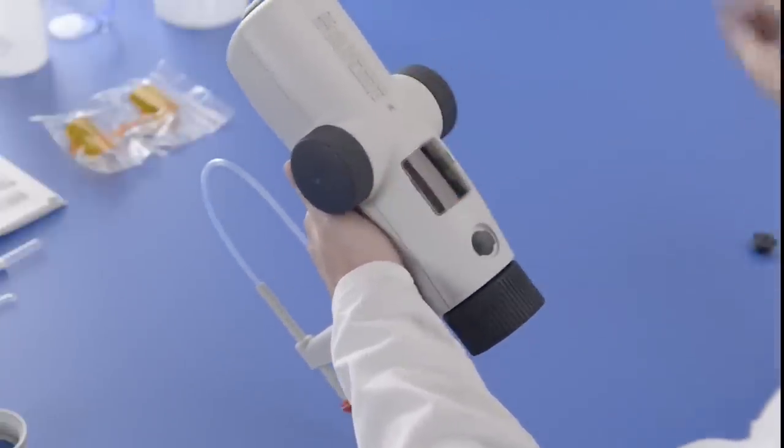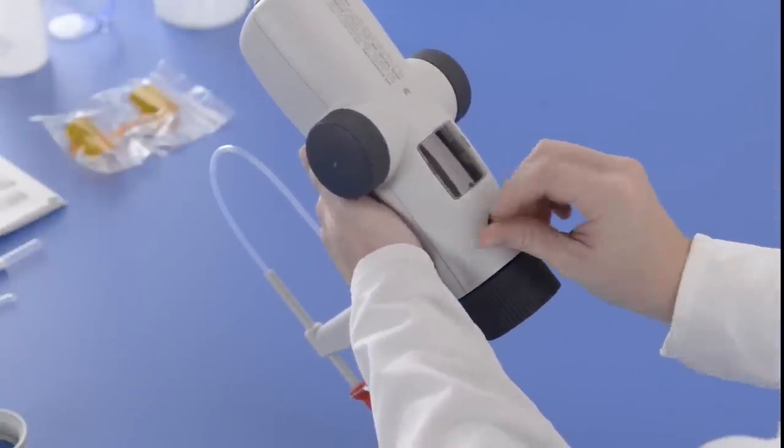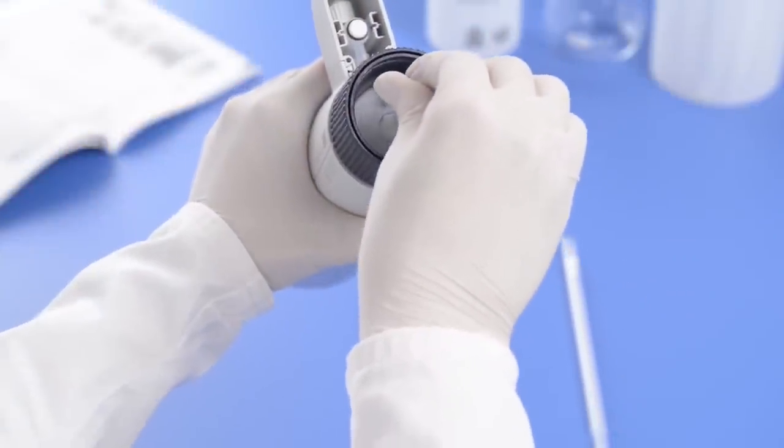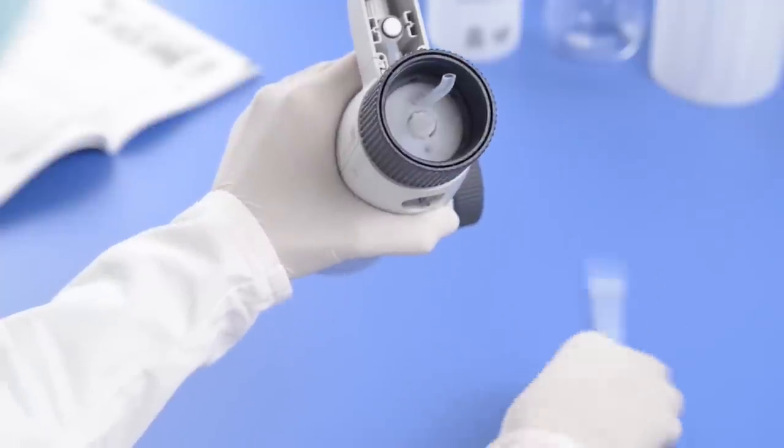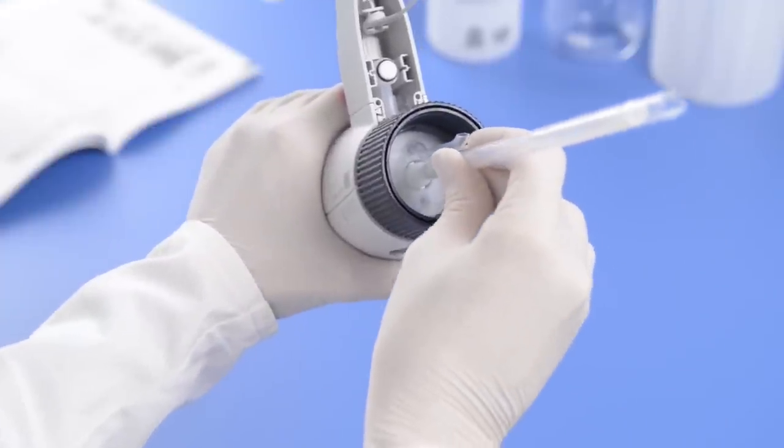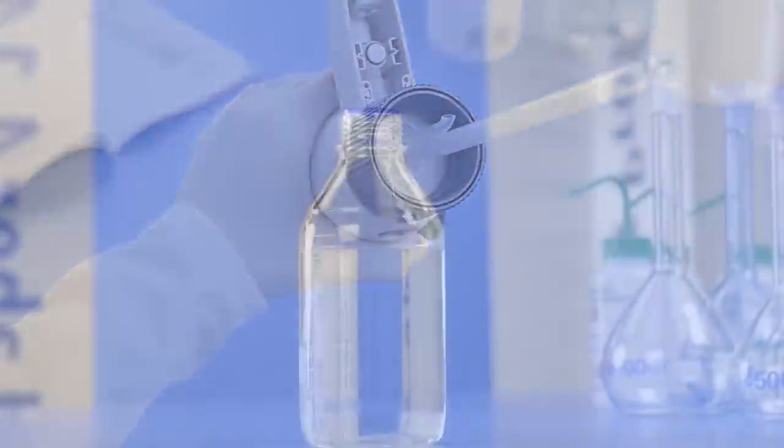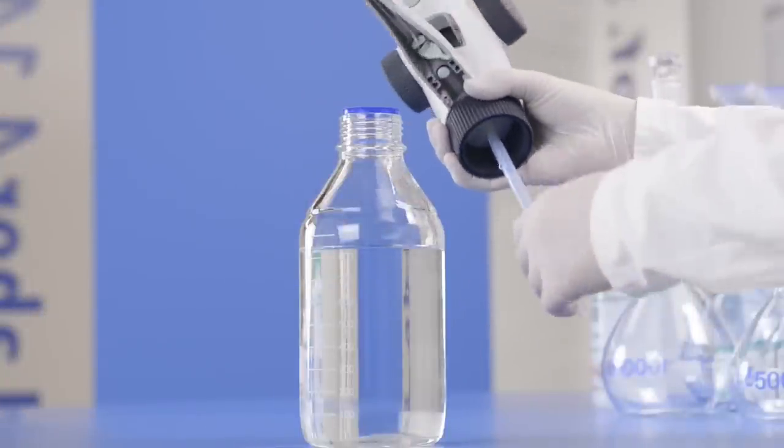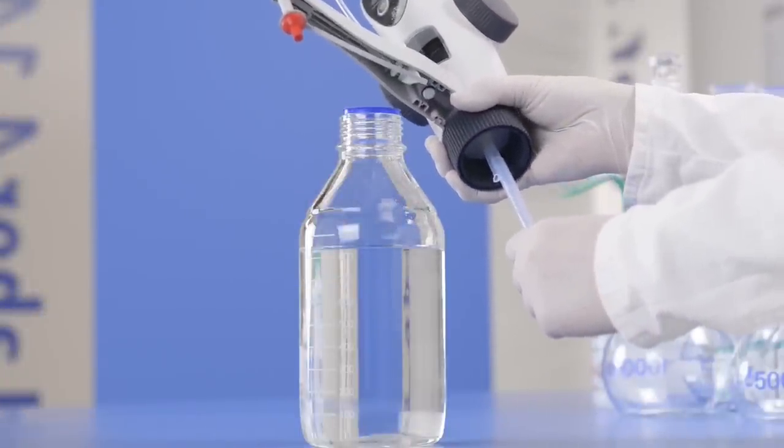Now the recirculation tube and the filling tube can be mounted. Adjust the length of the filling tube by pulling it out or pushing it in until it fits the height of the bottle.